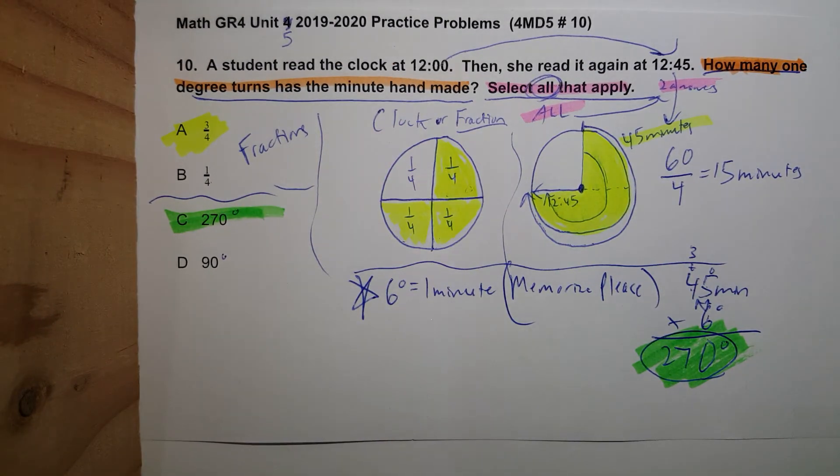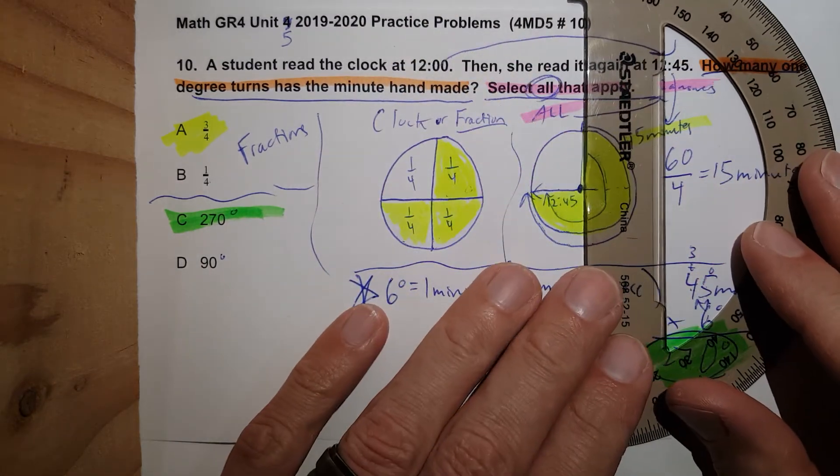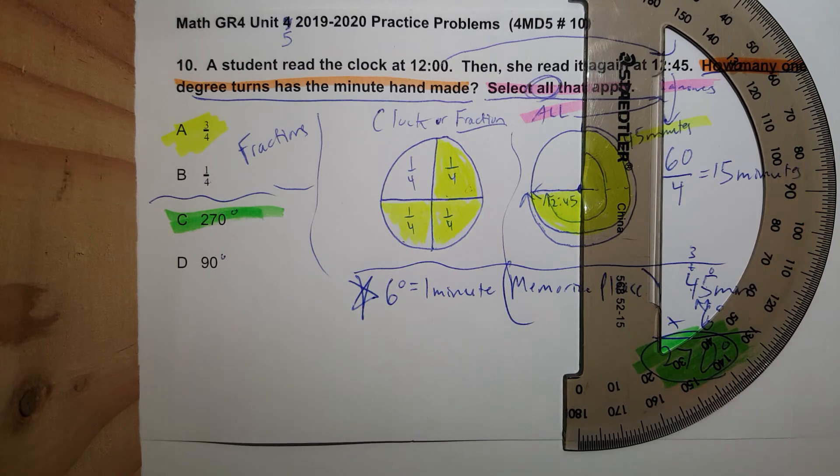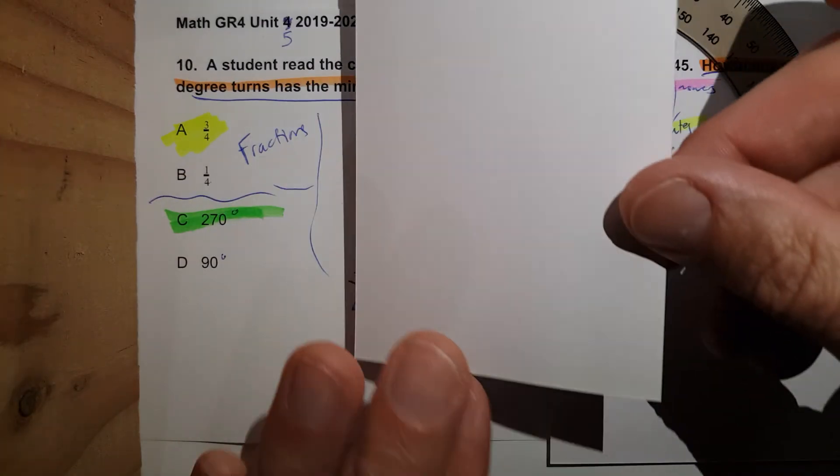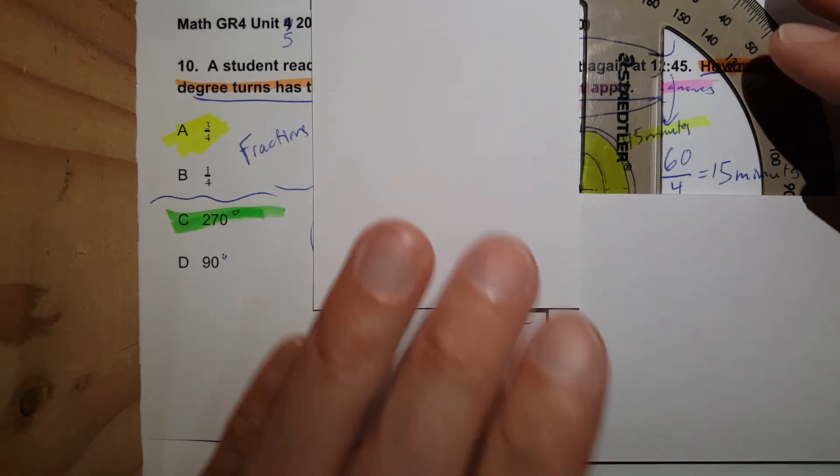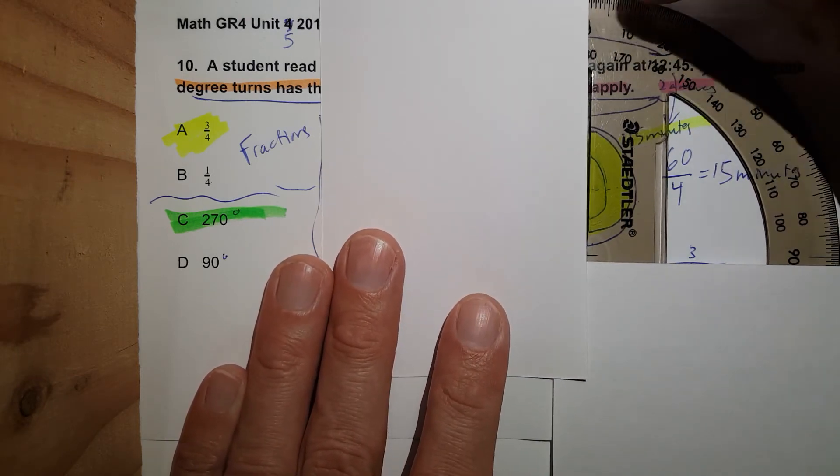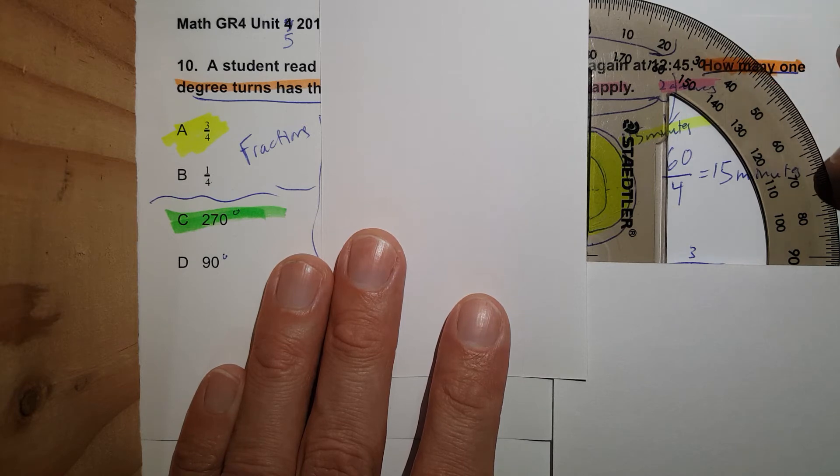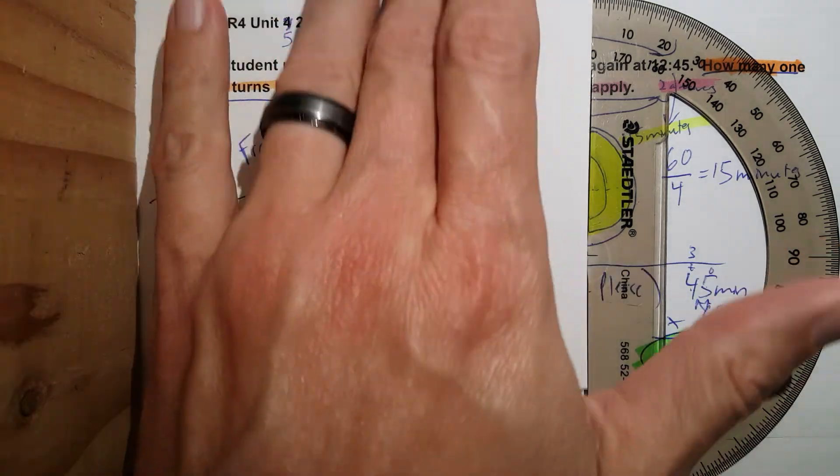If you just memorize the degrees, you know how to use the trusty protractor, right? A 90 degree angle is this. That's a 90 degree angle right there. See that? Let me move it down so you can see it. You start at zero, 10, 20, 30, 40, 50, 60, 70, 80, 90. That's 90 degrees.